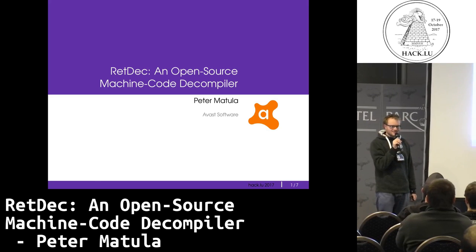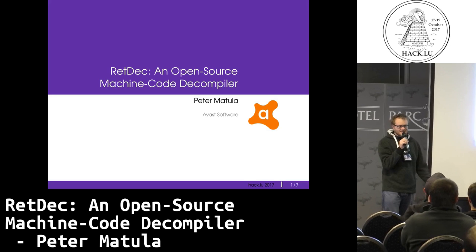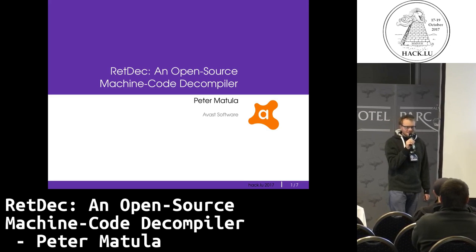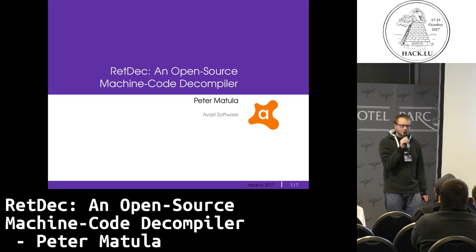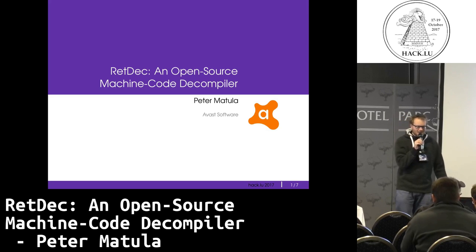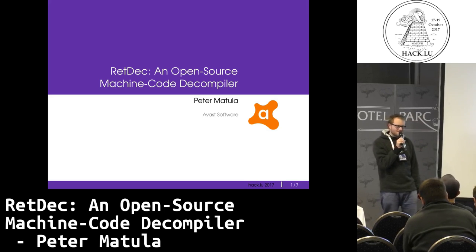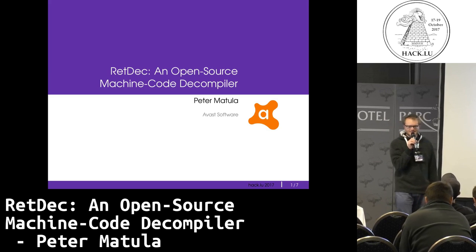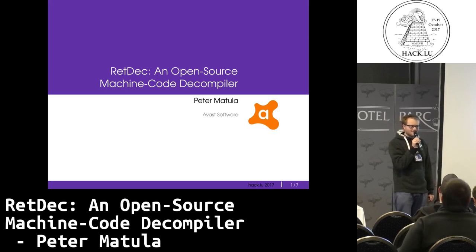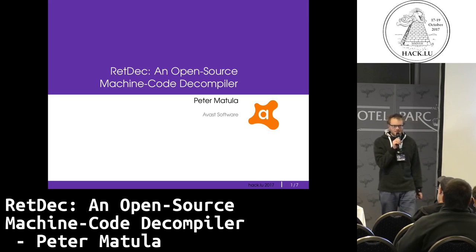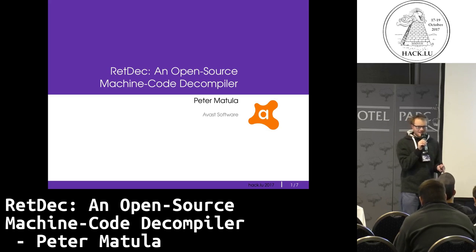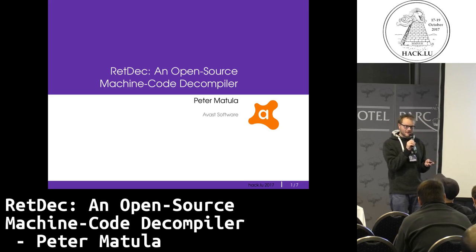The compiler itself was developed by AVG and we were not really trying to open source it because some of the critical modules were proprietary. But then when Avast bought AVG, they said this is really cool, can you put it out for the public? We said sure, but we will need some time to rewrite these modules. So we did, and now in about a month it will be public under the MIT license.